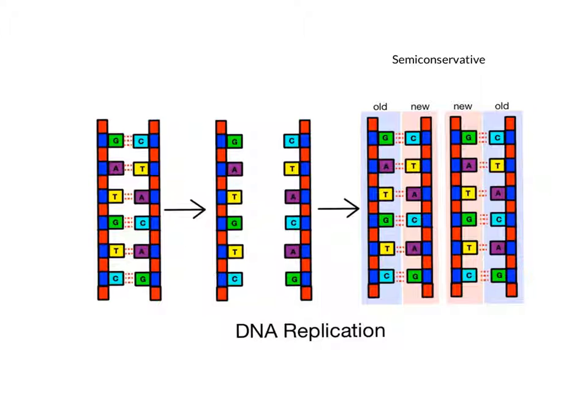This process is called semi-conservative replication because each double-stranded DNA copy is made up of one old strand and one new strand, with the old strand, the template being conserved.